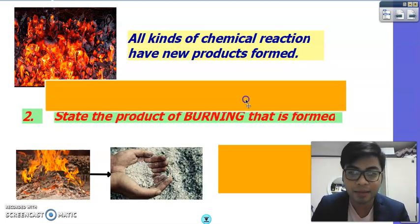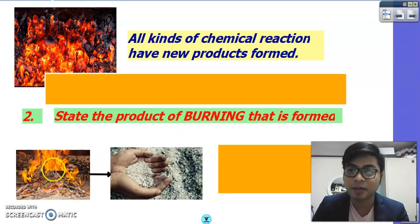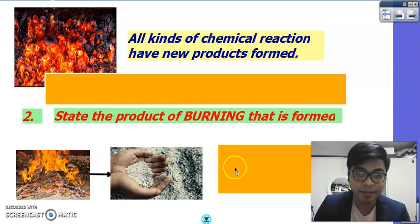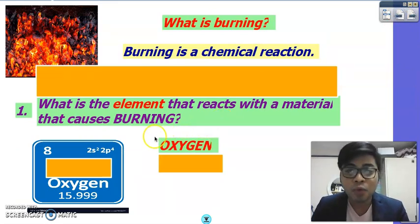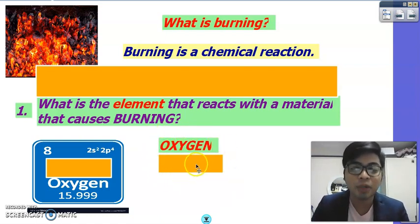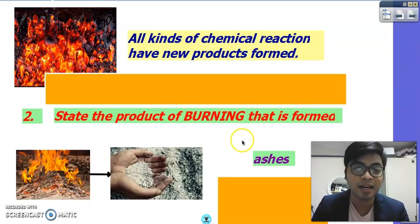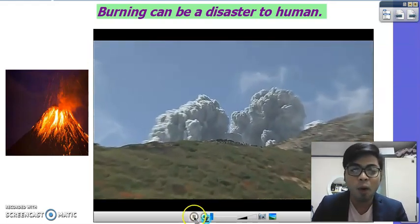Since all chemical reactions form new products, what is the name of the product of burning? After burning charcoal, we form ashes. Ashes are otherwise known as oxides, because everything that burns reacts with oxygen — therefore what we are forming are oxides, otherwise known as ashes.